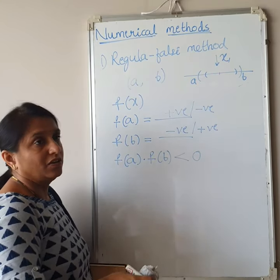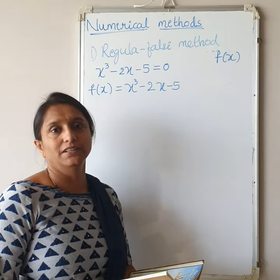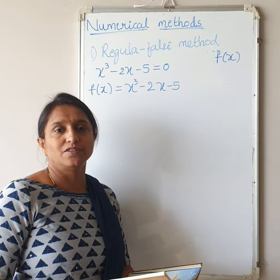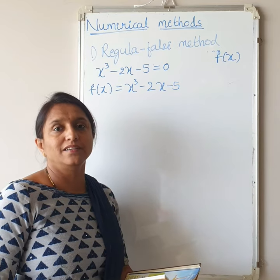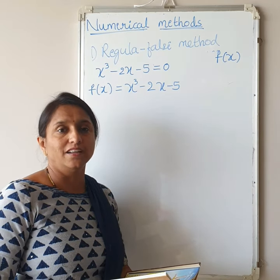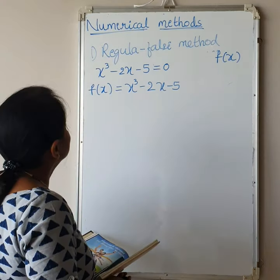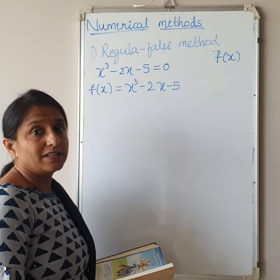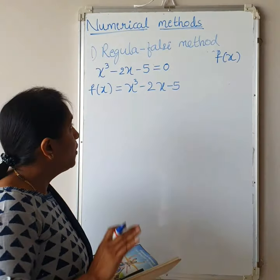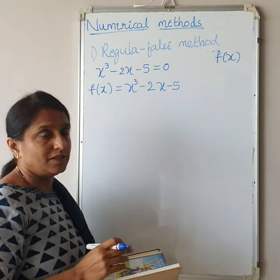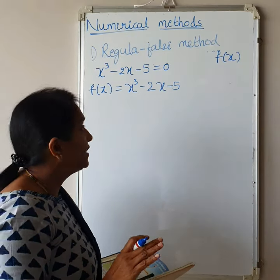Let us solve examples based on the Regula Falsi method. Students, I suggest you take a pen, pencil, and calculator so it is easy to understand. If you solve along with me, you will become perfect in this procedure. Let us consider the example: X³ - 2X - 5 = 0. First write down F(X) = X³ - 2X - 5. This is an algebraic equation.